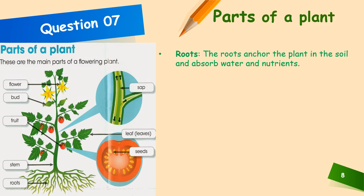Parts of a plant: these are the main parts of a flowering plant — the flower, the bud, the fruit, the stem, the roots and the leaves. In the fruits we get the seeds, and in the stem we get the sap.